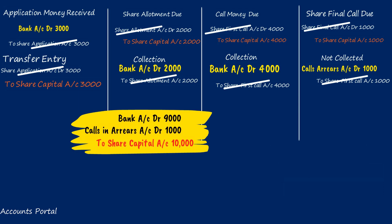For forfeiture, we pass the journal entry. Whatever was credited to Share Capital for Brahmi — rupees 10,000 — must be reversed because he is no more a shareholder. Share Capital account Dr. 10,000. This rupees 9,000 already received is the company's profit, credited to Share Forfeiture account: To Share Forfeiture account 9,000. Since shares are forfeited, calls in arrears will not be collected, so: To Calls in Arrears account 1,000.